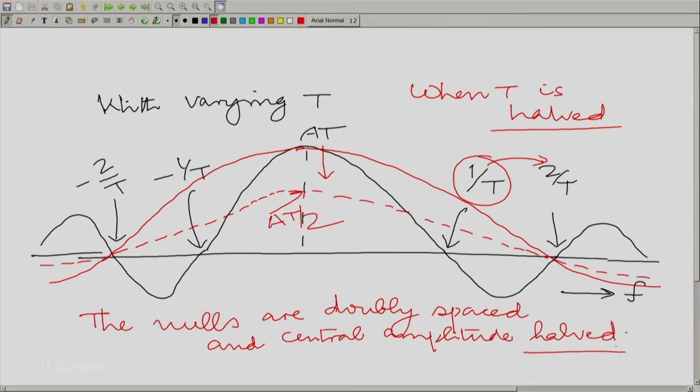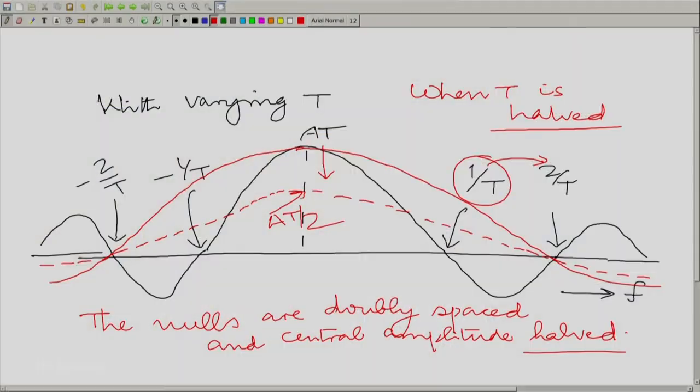Of course you can similarly see what happens when we double. If we double T, the nulls will be half spaced. So now you will have nulls at 1 by 2T and so on. So you will have twice the number of nulls in the same interval. And of course the central height will also double. Now you can see there is some intuitive logic in all this. Let us look at this curve once again here.